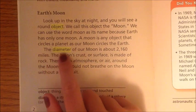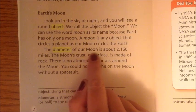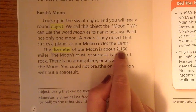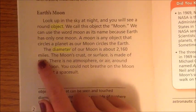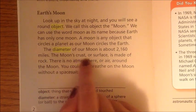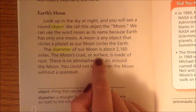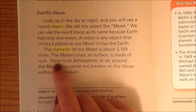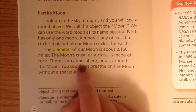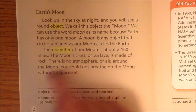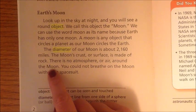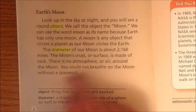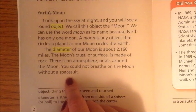The diameter of our moon is about 2,160 miles. The moon's crust or surface is made of rock. There is no atmosphere or air around the moon. You could not breathe on the moon without a spacesuit.